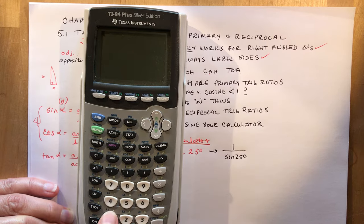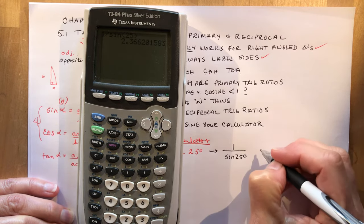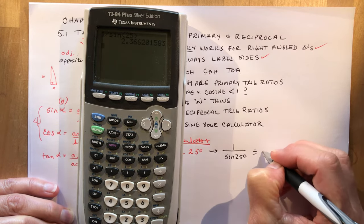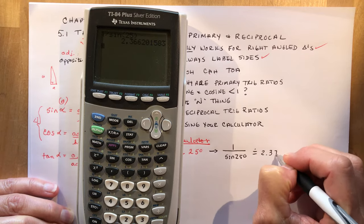So you bring in your trusty calculator, you could do it all in one step. You could say 1 divided by the sine of 25 degrees. There you go, 2.366. So we'll say approximately 2.37.